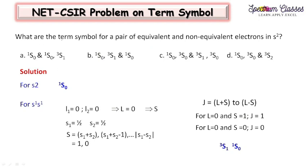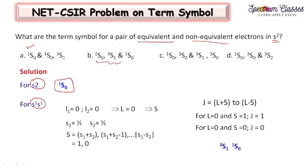The next question asks for term symbols for equivalent and non-equivalent electrons of S2. Equivalent electron means S2 type of configuration, which is a completely filled shell. For S2, this gives only one term symbol: 1S. This is the only term which has the 1S configuration, since S2 is completely filled and only one arrangement is possible.